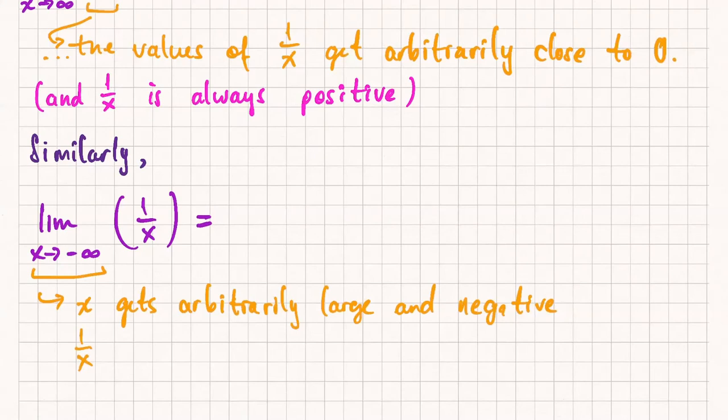Again, think about a table of values. Negative 1. X is negative 1. Negative 10. Negative 100. Negative 1,000. So Jacqueline says they still approach 0. They still approach 0. The only difference is the values are just negative. But overall, they still approach 0.